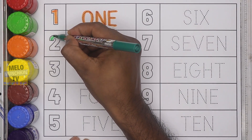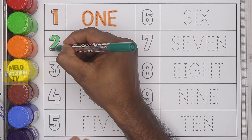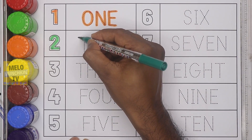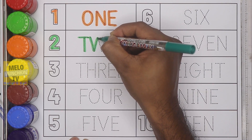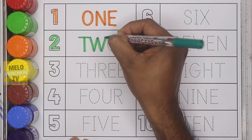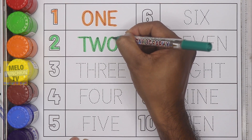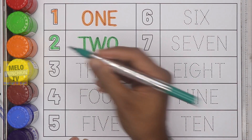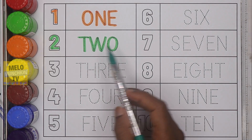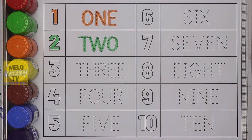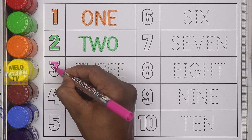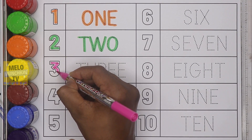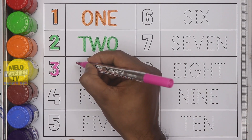Next, I'll take dark green color and write number two. This is number two and the spelling is T-W-O, two.